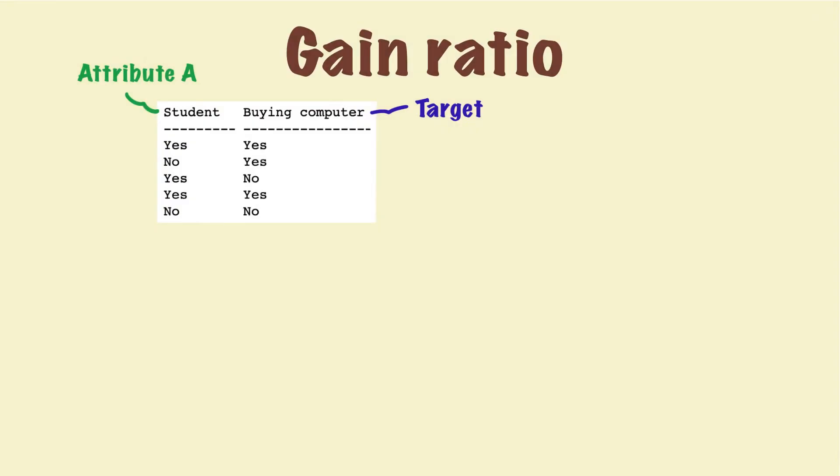Let's look at an example we saw in the previous videos. Student is attribute A and buying computer is our target attribute. In other words, the purpose of the model is to predict whether a person will buy a computer or not.